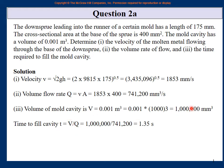You already know the volume and the volume flow rate, so you just divide them to get the answer. Since volume is in mm³ and flow rate is in mm³/s, the units cancel and you get time in seconds. It's a simple question — know the basics and you can solve it.